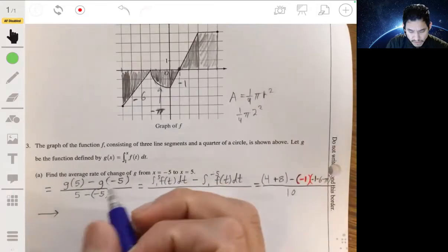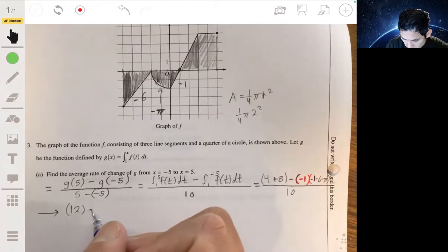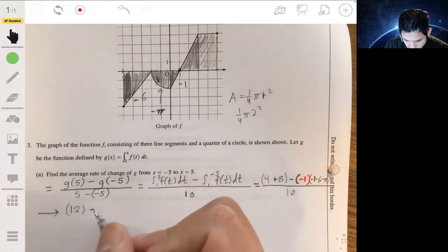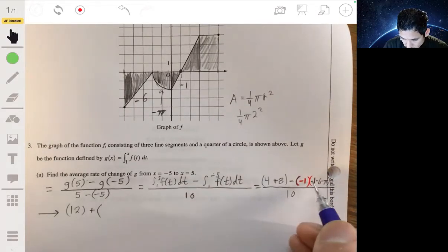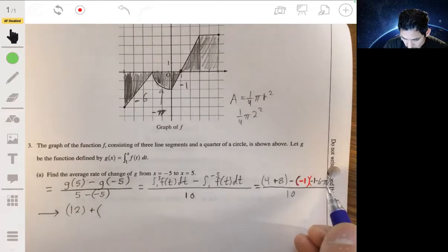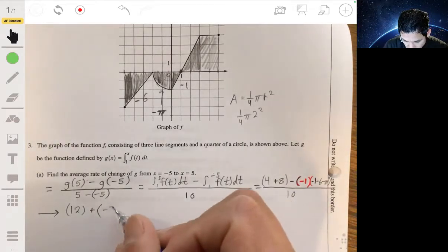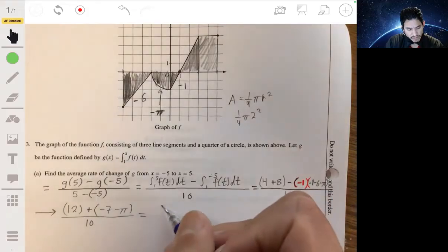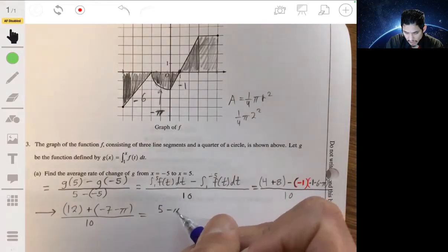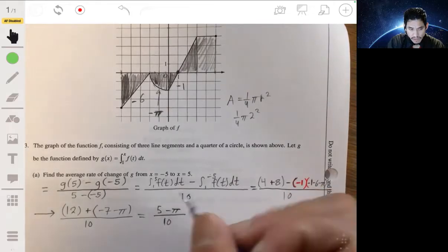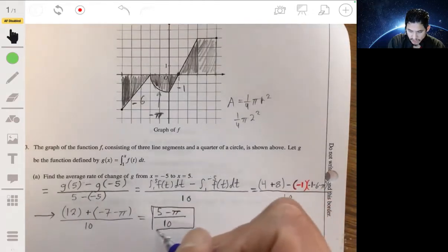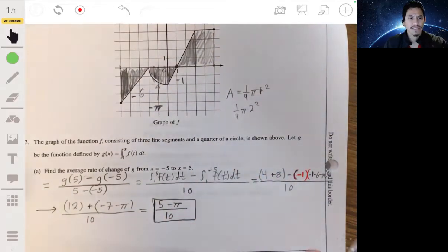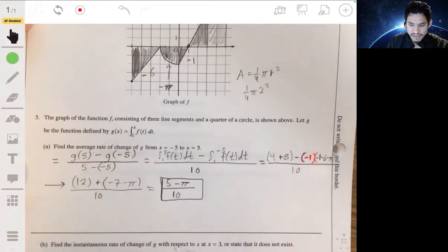All over 10. So on top, we have, simplifying this, 12, minus and minus, so it's really 12 plus. Negative 7, minus pi, negative 7, minus pi, all over 10, and that comes down to 5 minus pi over 10. And since this is a non-calculator problem, you really don't have to worry about simplifying it into a decimal, so this answer will be fine.